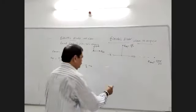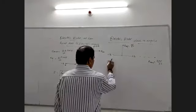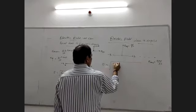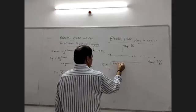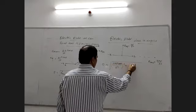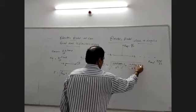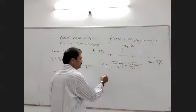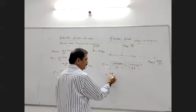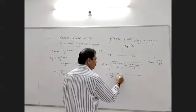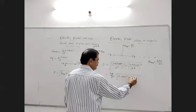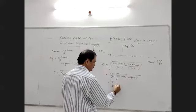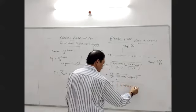At the general point, E is the square root of (2kp cosθ / r³)² plus (kp sinθ / r³)². This simplifies to (2kp / r³) times the square root of 4cos²θ plus sin²θ.